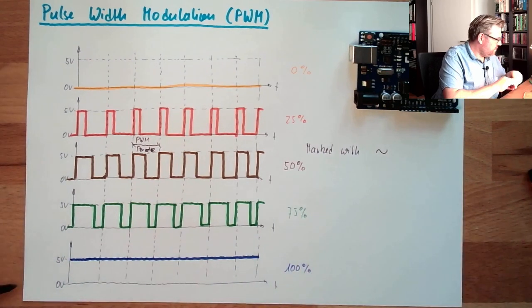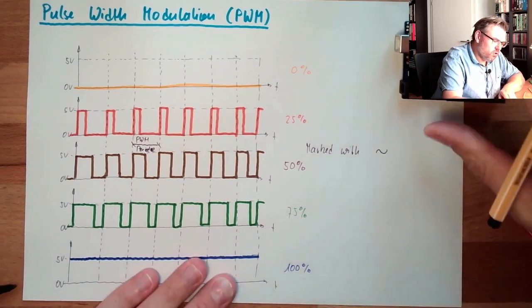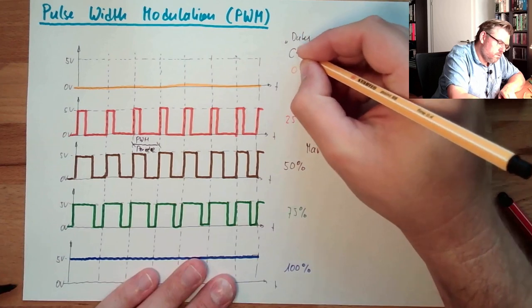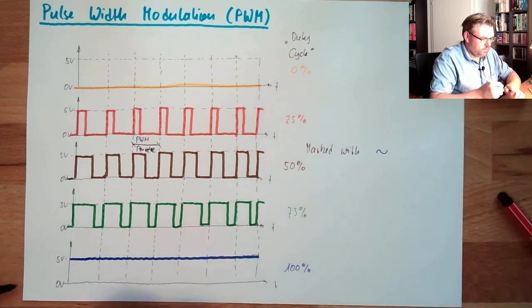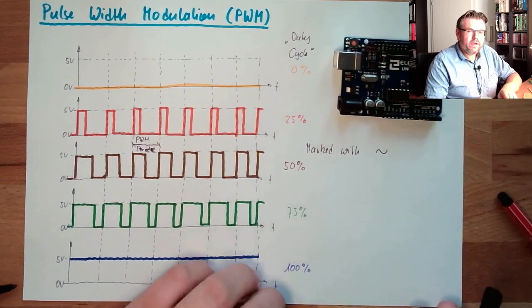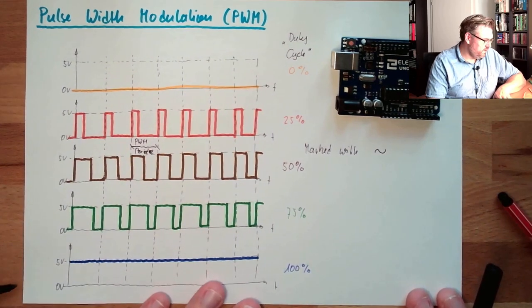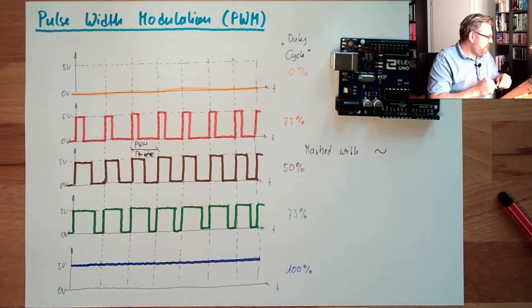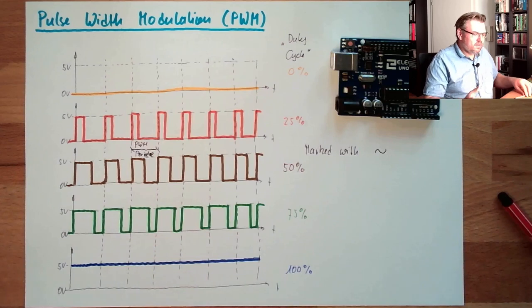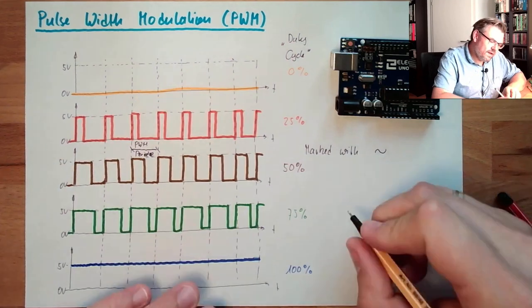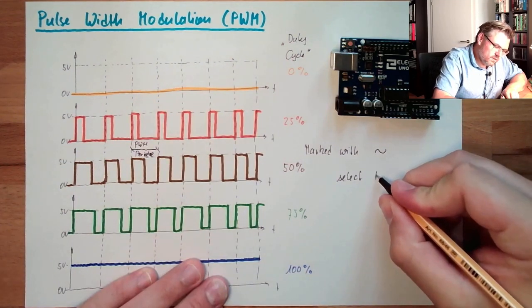The thing here, this percentage, this is called duty cycle. And on the outputs marked with a tilde sign, we can adjust a duty cycle. We can select this, we can select simply. And we can select a value.